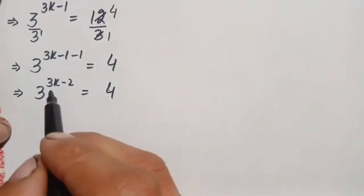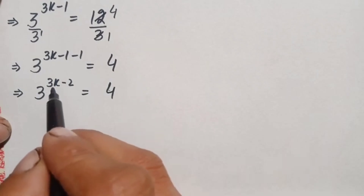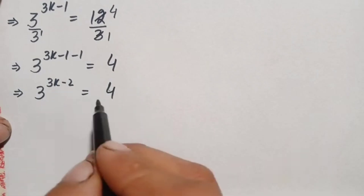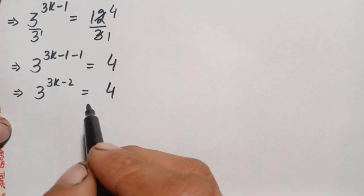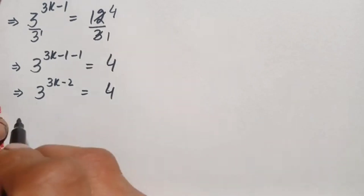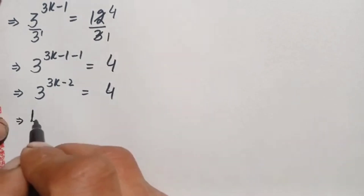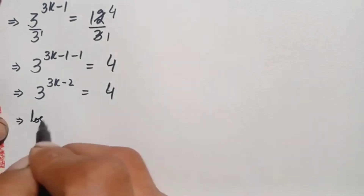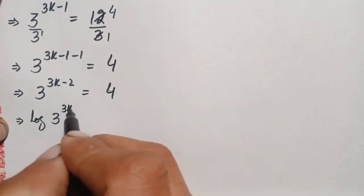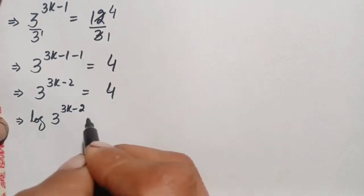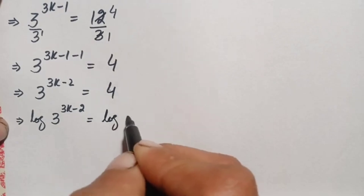Now we have an equation with a variable in the exponent. To solve for that power, we take the common log on both sides, giving us: log of 3 raised to power (3k − 2) equals log of 4.